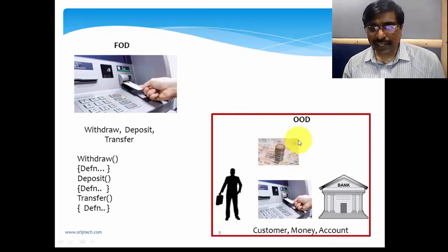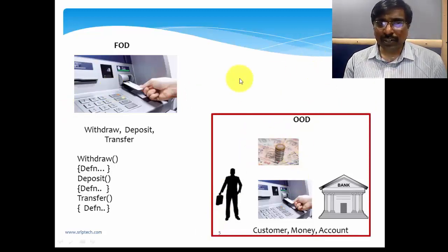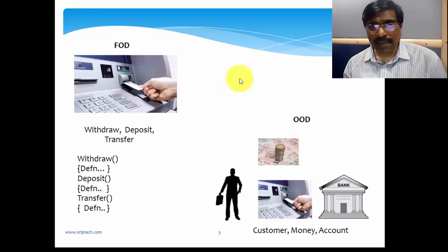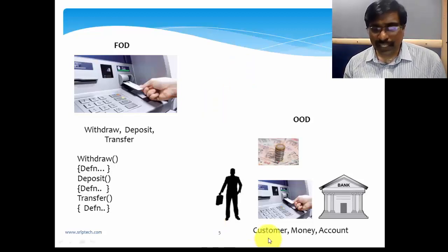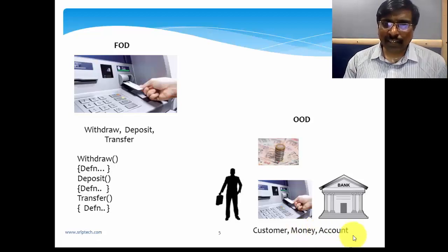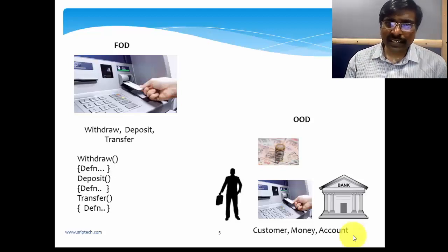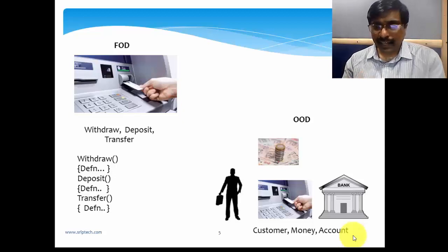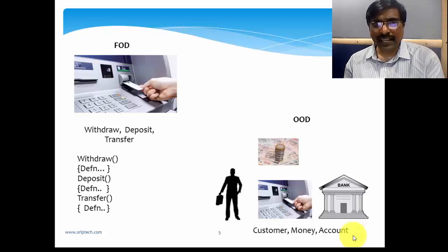In object-oriented design, we think in terms of objects — nouns. Using the same banking domain, you have a customer object, a money object, and an account object. Object-oriented design not only identifies these objects but also addresses the interaction between them. The communication between objects is called message communication, which we will cover in coming chapters. For now, understand there are two programming approaches: function-oriented design and object-oriented design.